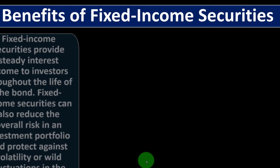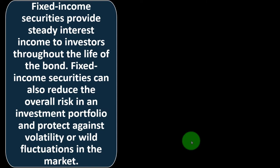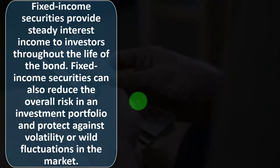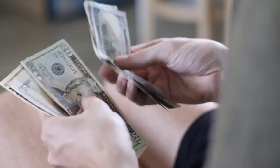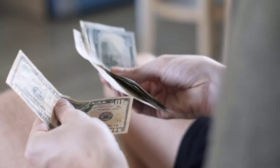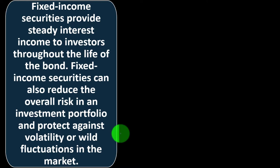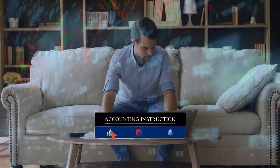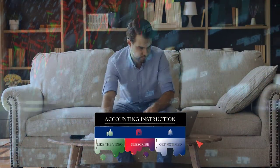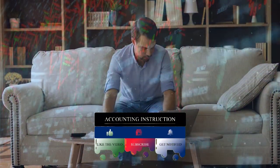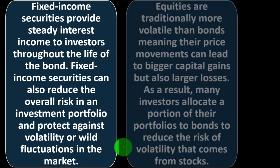Benefits of fixed income securities: fixed income securities provide steady interest income to investors throughout the life of the bond. This can be especially valuable during retirement when you want that fixed income to live on. Fixed income securities can also reduce the overall risk in an investment portfolio and protect against volatility or wild fluctuations in the market. Even if you're not reliant on the income, you might want a portion in fixed income — breaking out between stocks, bonds, CDs, and so on — so you're not fully exposed to equities.